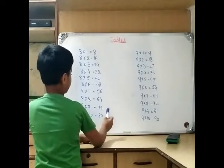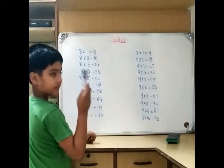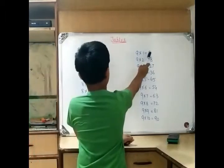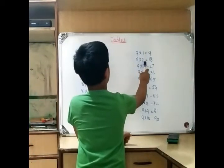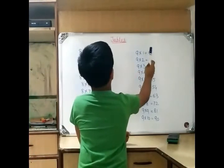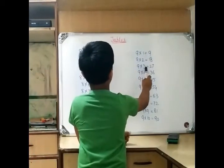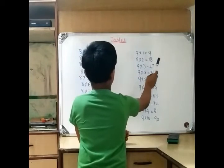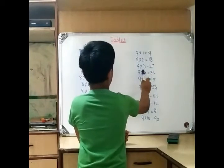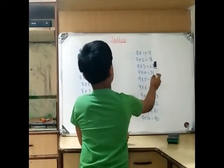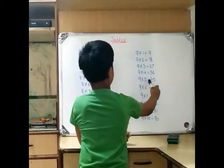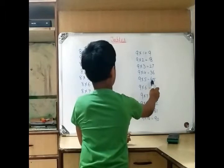10 8s are 80. 9 ones are 9, 2 9s are 18, 3 9s are 27, 4 9s are 36, 5 9s are 45.